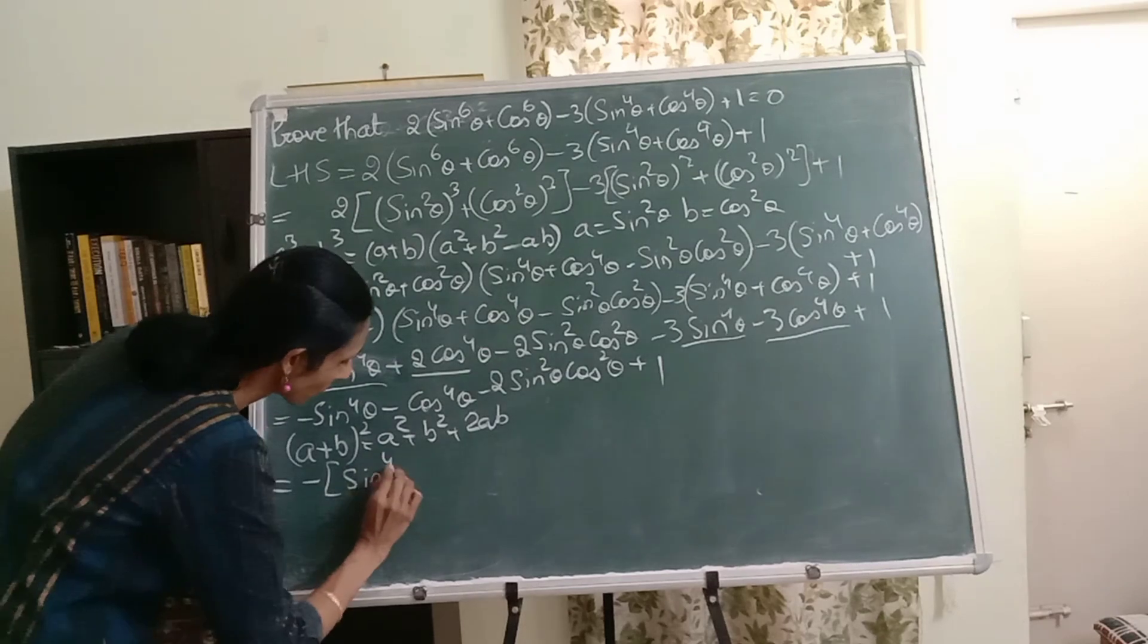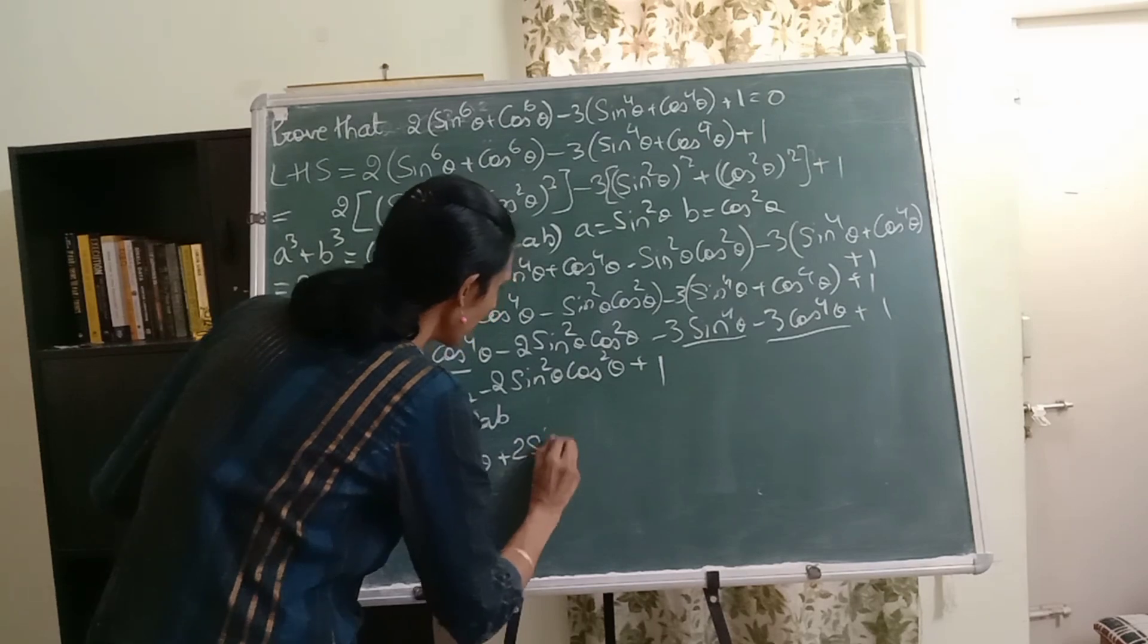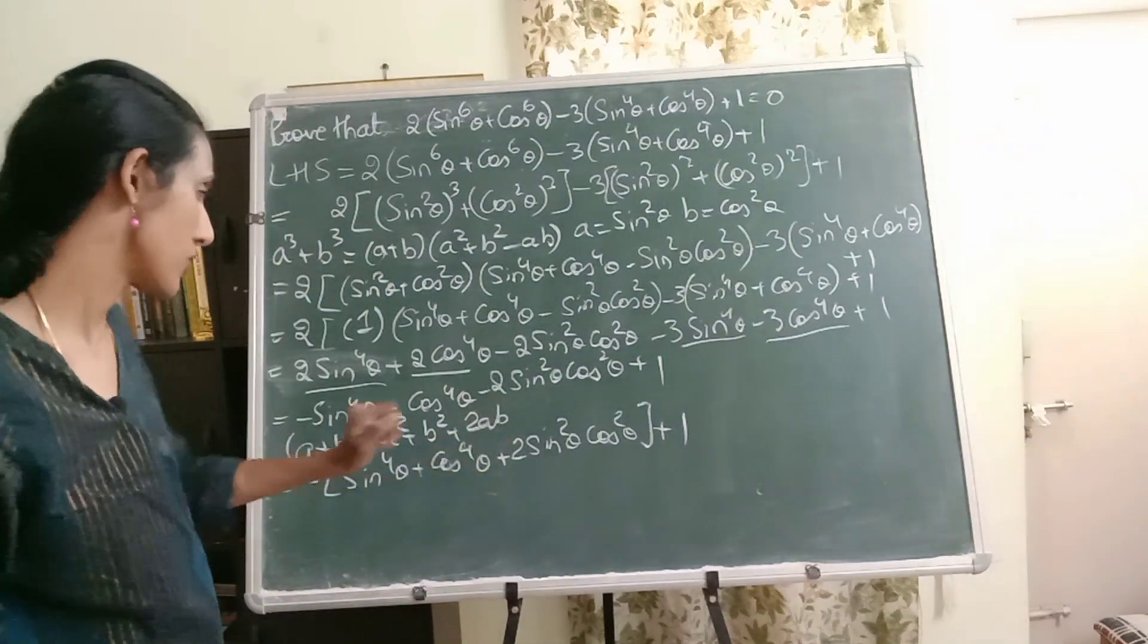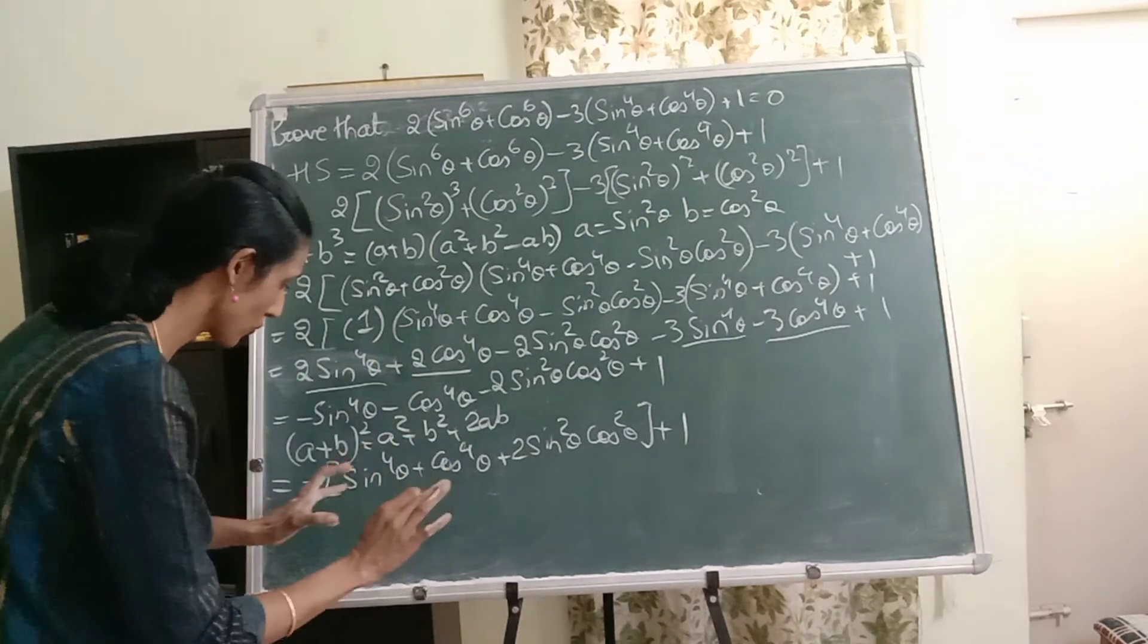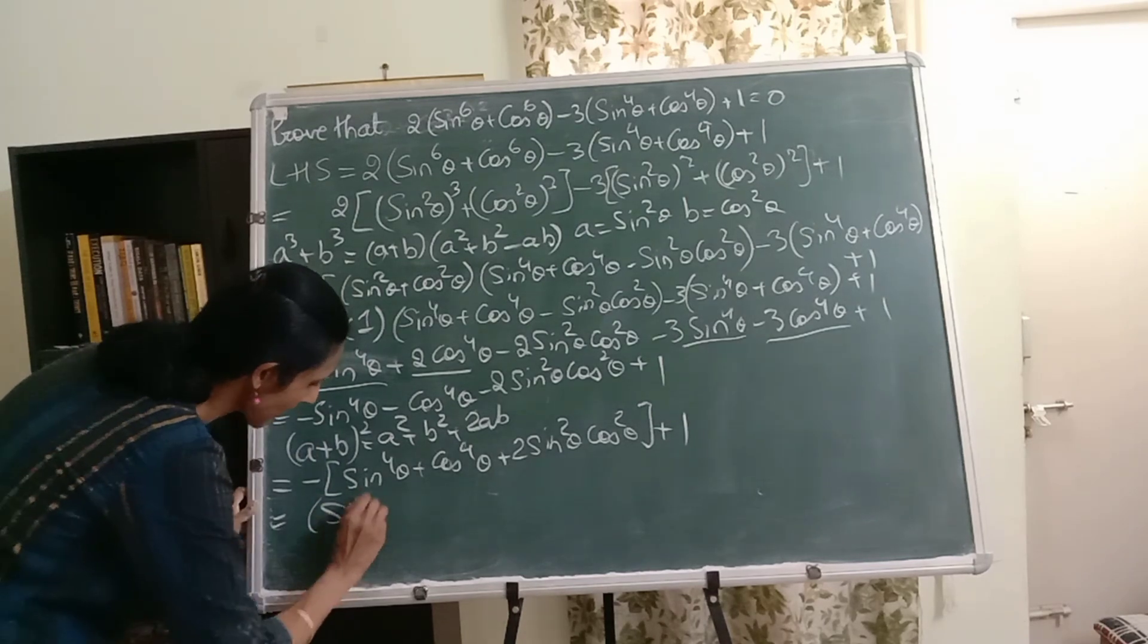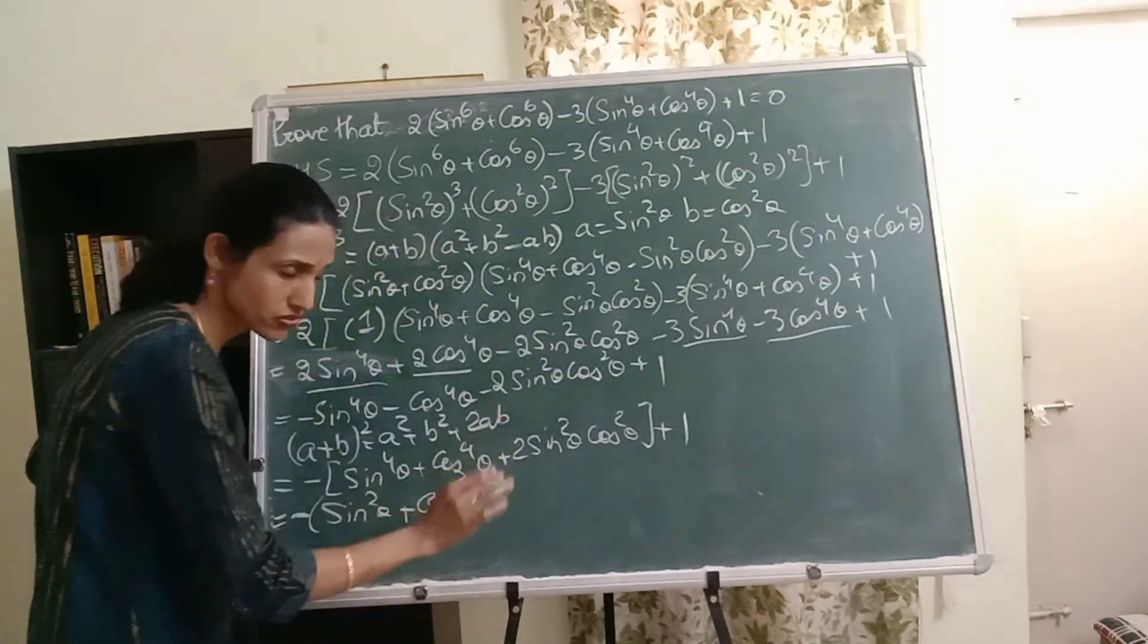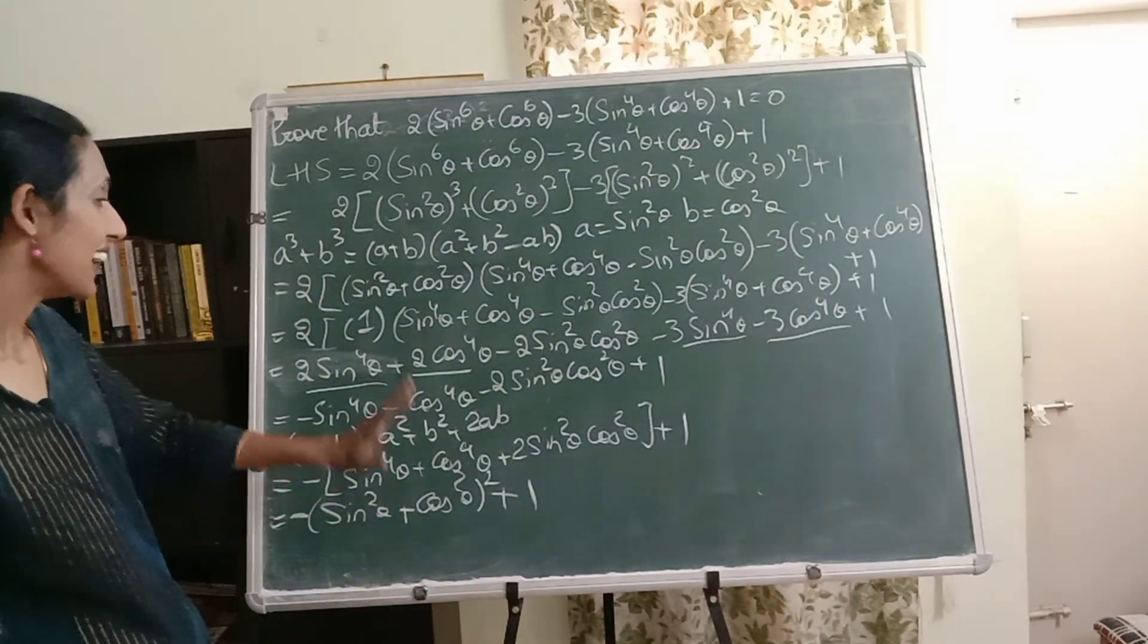Only for the first three terms. Let that plus 1 be as it is. We don't need that now. Perfectly it looks like a square plus b square plus 2ab. So I can write it as a plus b the whole square. Where what is a? Sine square theta. So I'll write it as a which is sine square theta. Remember the minus sign is still there. Plus b is cos square theta the whole square. And what is remaining? Plus 1. See friends.